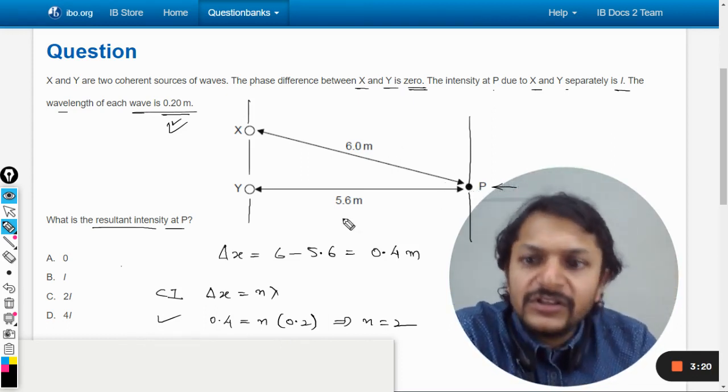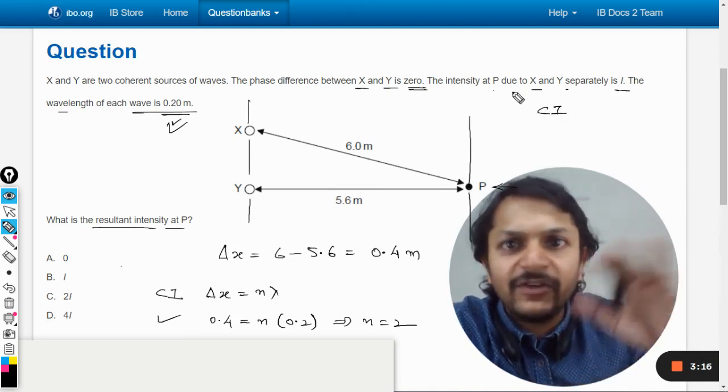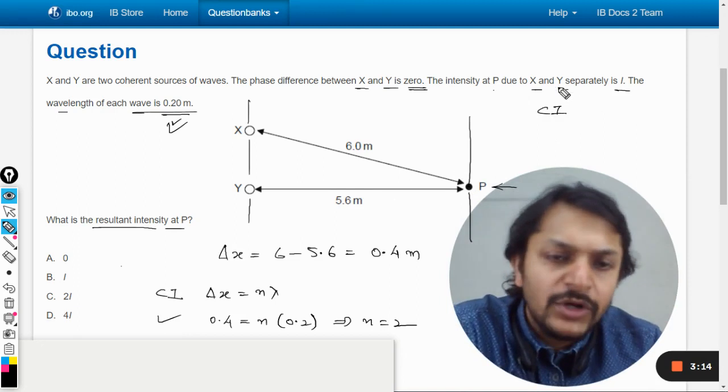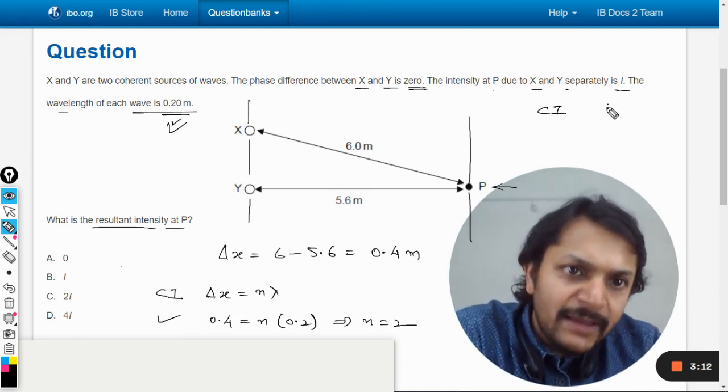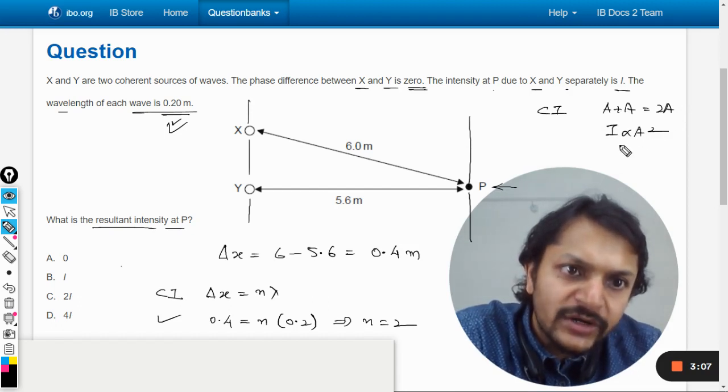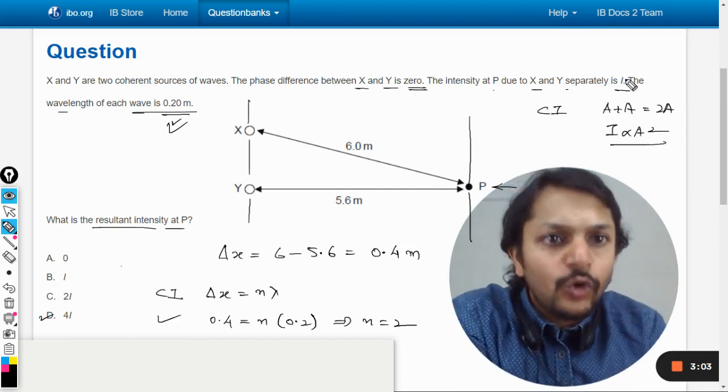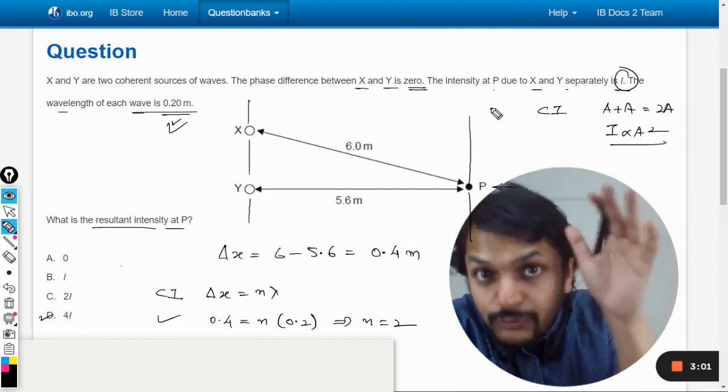You see whenever the constructive interference is taking place or any interference it is just a1 plus a2 or a1 minus a2. Now both of the intensities and amplitudes are the same. So it is a plus a. It is 2a. Intensity is directly proportional to a². That is why the intensity is going to be 4 times the original intensity. Now there is no doubt about it.